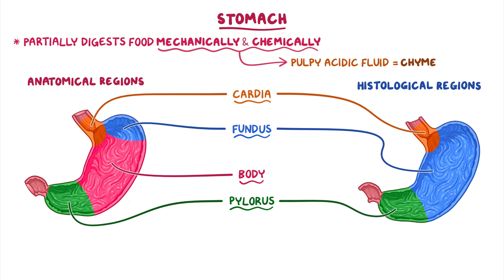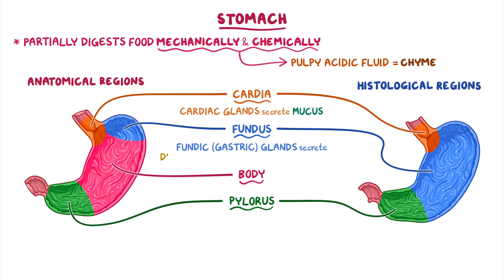The cardia is a small area surrounding the opening to the esophagus, which contains cardiac glands that secrete mucus. The fundus is the largest region histologically, since it also includes the body of the stomach. This region has fundic or gastric glands that secrete digestive enzymes such as pepsin and a protective layer of mucus.